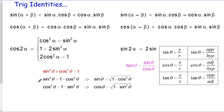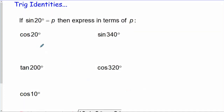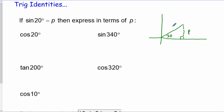Trig identities - the reason people struggle with these is that they don't take the time to learn these identities off by heart. The first type of question: we get sin 20 equals p, and we're asked to express other things in terms of p. To work out cos 20, we draw a little sketch. If this is 20 degrees, sin is y over r, so this is like p over 1 - p being the y value, 1 being the r value. We can work out our x value using Pythagoras: square root of 1 minus p squared.